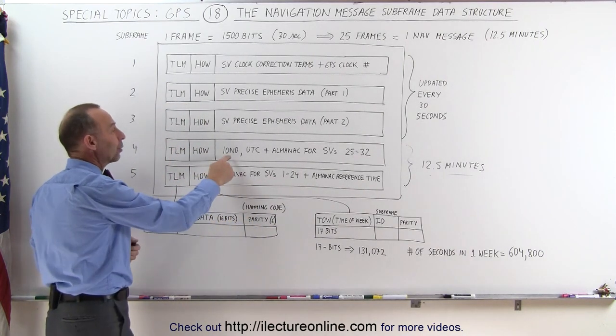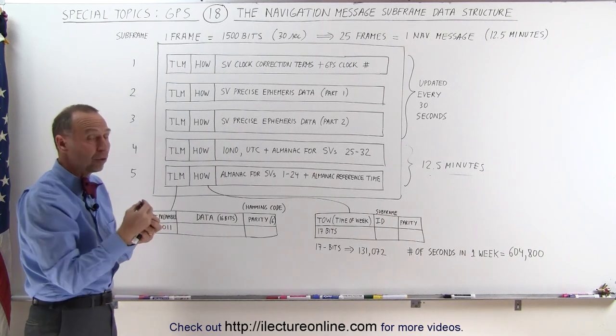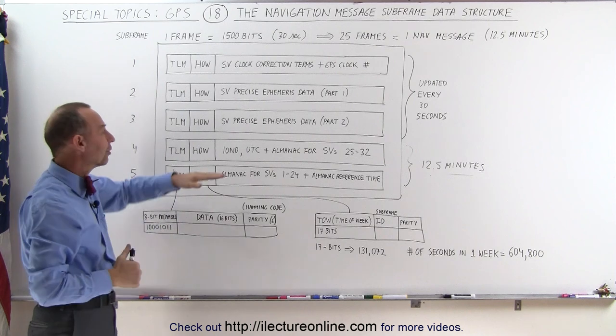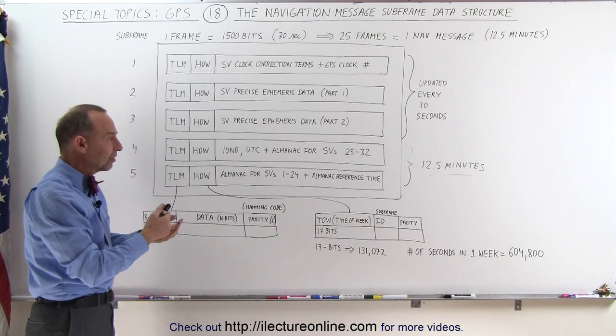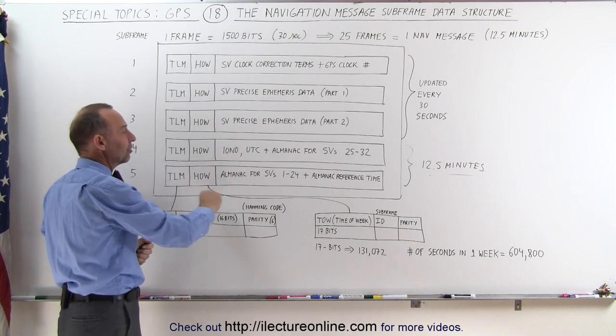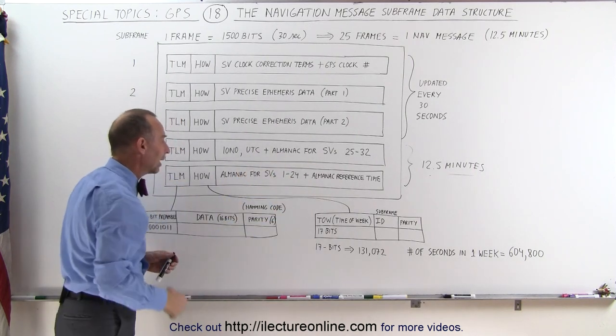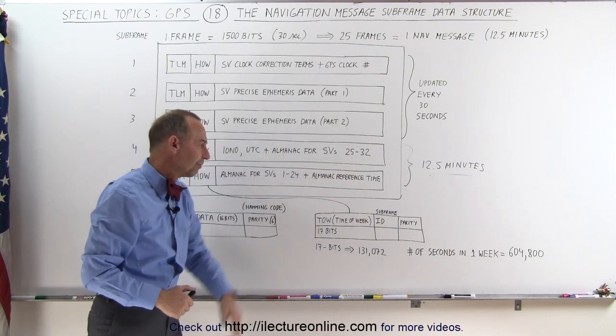They also contain iono information. We say iono for the ionosphere conditions because we need to adjust for those to be able to exclude some of the errors that the refracting properties of the ionosphere affect the data with, so we need to have correction terms that come out of this information, the clock information, and then the rest is just the almanac data. We also include an almanac reference time.